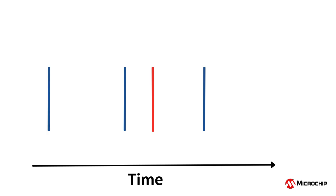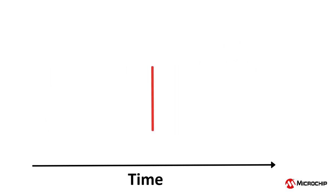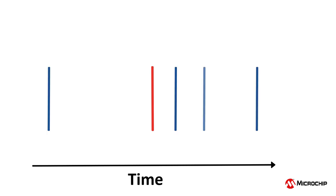Now let's think about what these rising edges of the non-ideal clocks look like when we add them all together. We see edges appearing all over the place — sometimes here, sometimes here, sometimes here. When viewed from the reference point of the ideal clock rising edge, shown in red, the edges of the real clock appear to be moving back and forth very quickly. They are jittering back and forth.